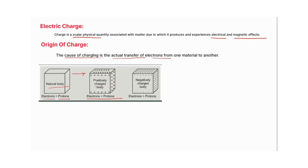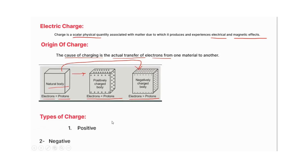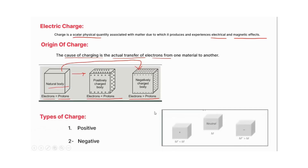Keep this in mind: whenever electrons are donated, the body becomes positively charged. A neutral body can become negatively charged by accepting electrons. For a negatively charged body, the number of electrons will always be greater than the number of protons. Thus, we have seen the two types of charges: one is positive and the other is negative. A neutral body can become either a positively charged body or a negatively charged body.